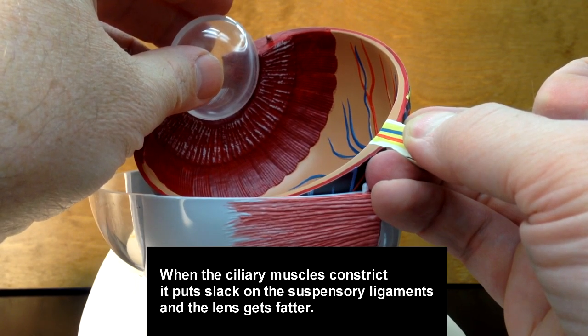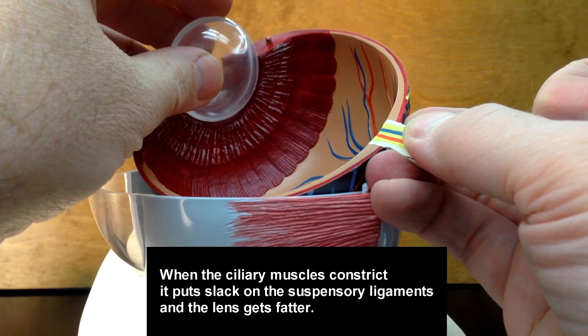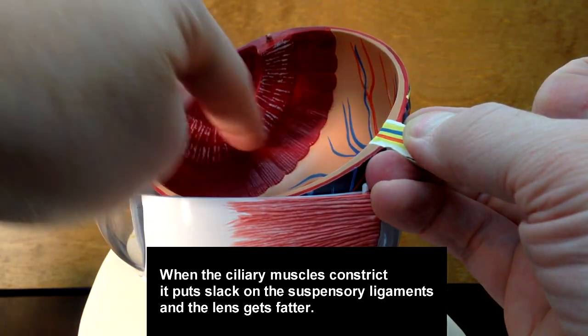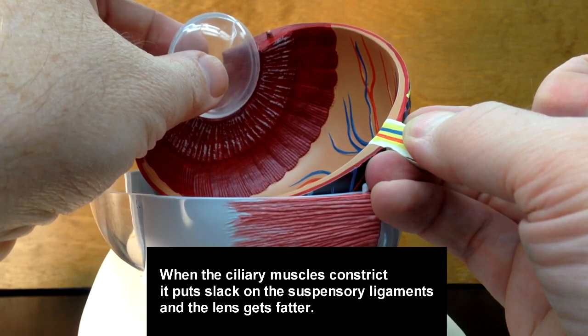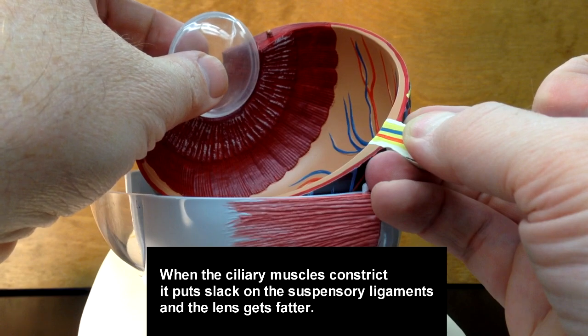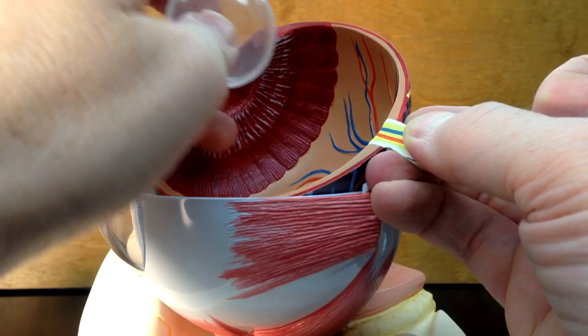These white things right here are suspensory ligaments. They'll suspend the lens from the ciliary body. When the ciliary body muscles contract, they'll constrict this circular opening right here, which will put slack on the suspensory ligaments, which will allow the lens to get fatter.